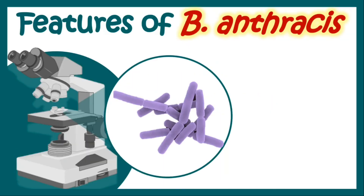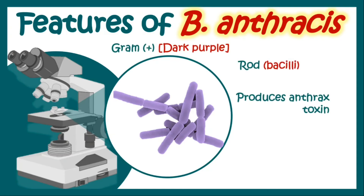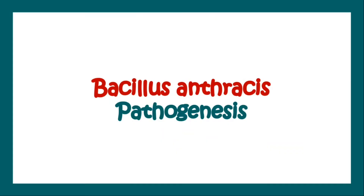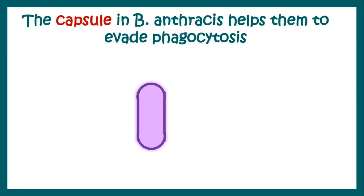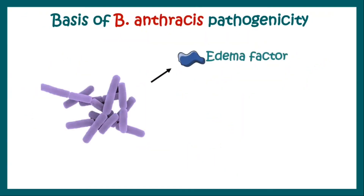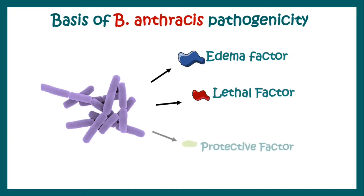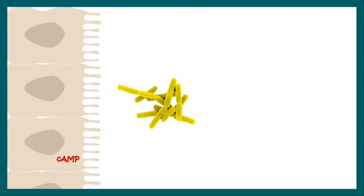Bacillus anthracis is a gram-positive organism that stains dark purple. It is a bacilli — a rod-shaped bacteria — and it produces anthrax toxin and can produce endospores. The capsule in Bacillus anthracis helps it evade phagocytosis. Apart from that, it has three important elements known as the edema factor, lethal factor, and protective factor, which contribute to its pathogenicity.